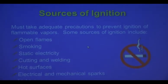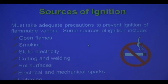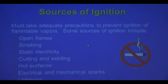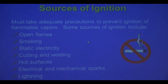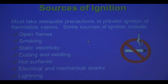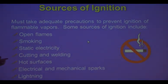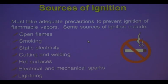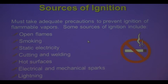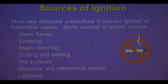Sources of ignition: you must take adequate precautions to prevent ignition of flammable vapors. Some ignition sources include — and this is not all-inclusive, it should cover those prevalent in your area — open flames, smoking, static electricity, cutting and welding, hot surfaces, electrical and mechanical sparks, and lighting.